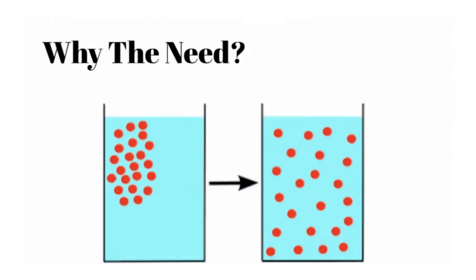Why do we need a cardiovascular system? The simple answer is that the human body is much too large for diffusion to allow for transport of all the things we need — gases like oxygen and carbon dioxide, nutrients such as glucose, and hormones throughout the body. Diffusion is the movement of ions or molecules from an area of high concentration to an area of low concentration, as shown in this image where molecules spread from left to right.